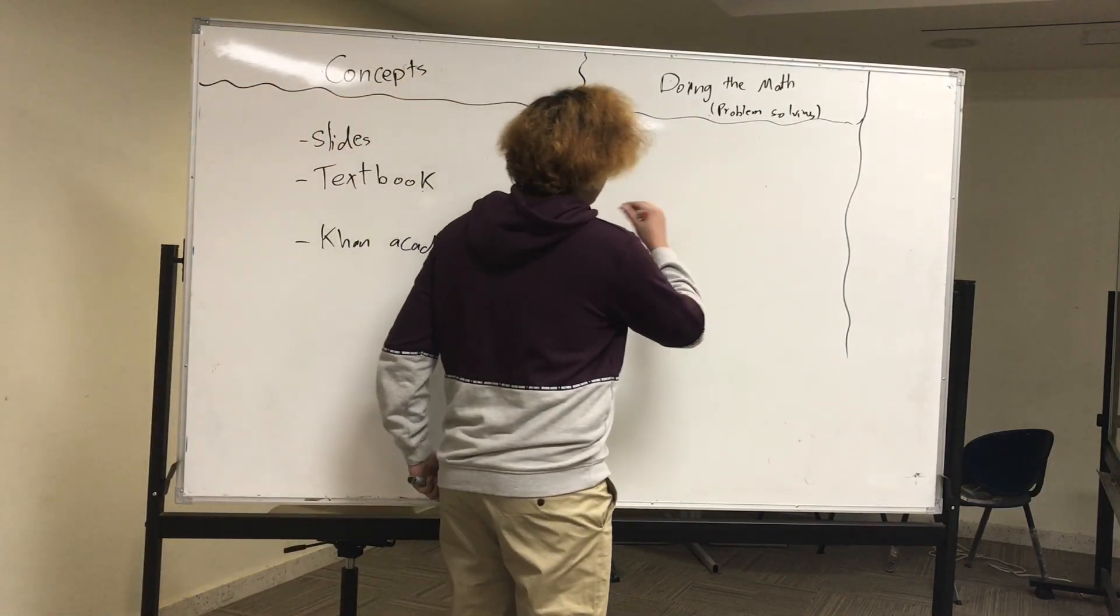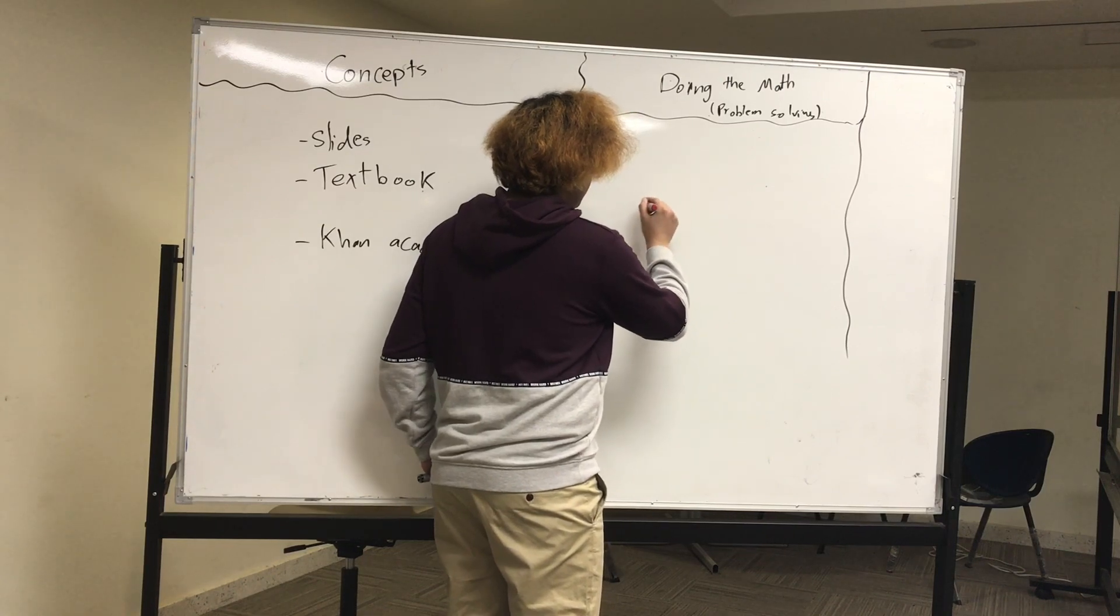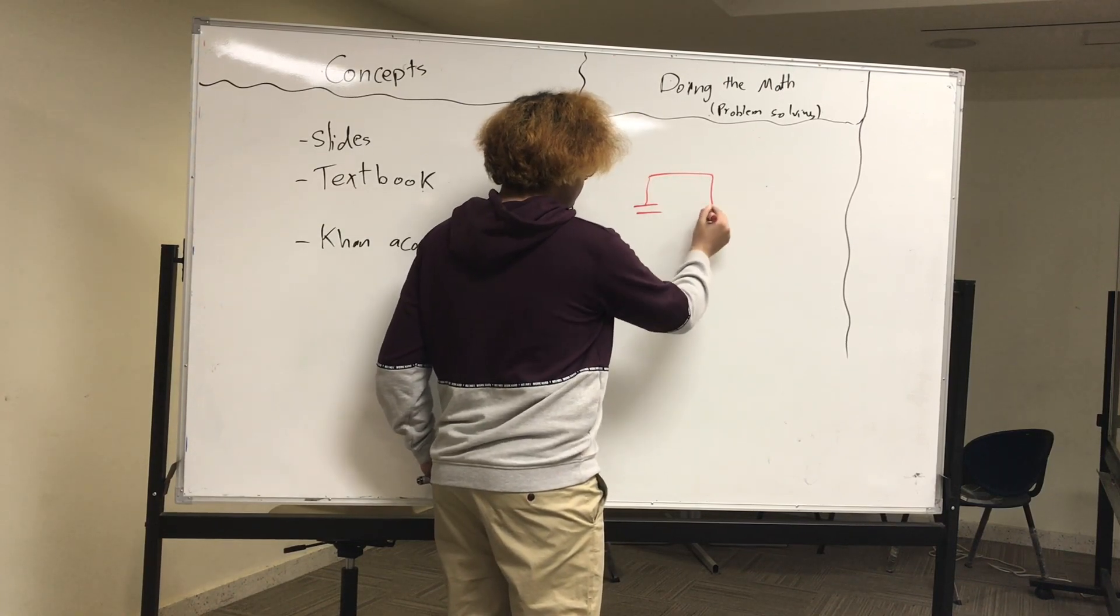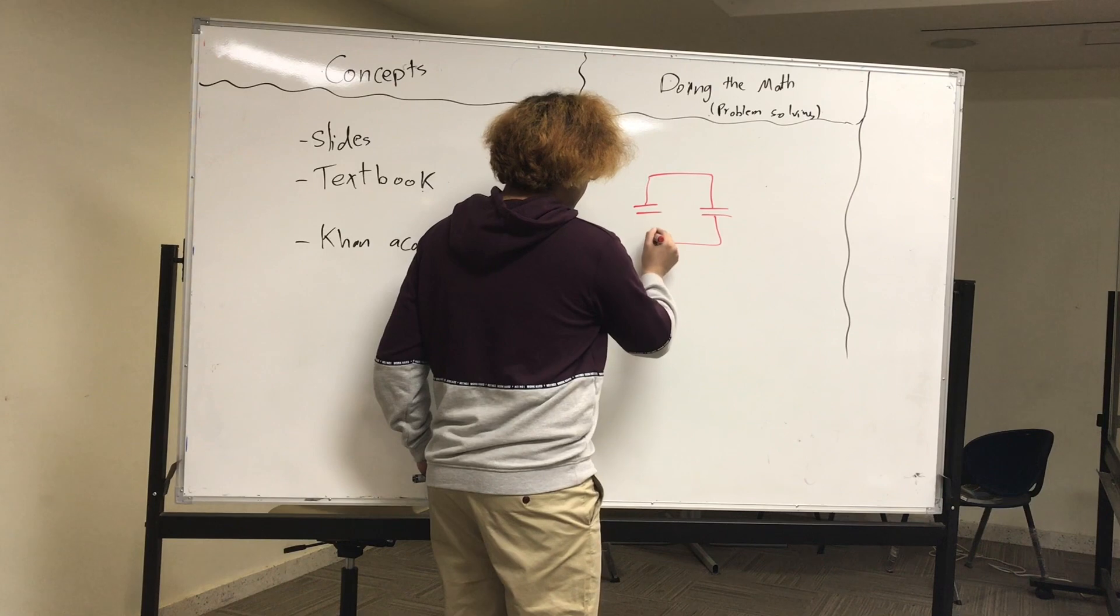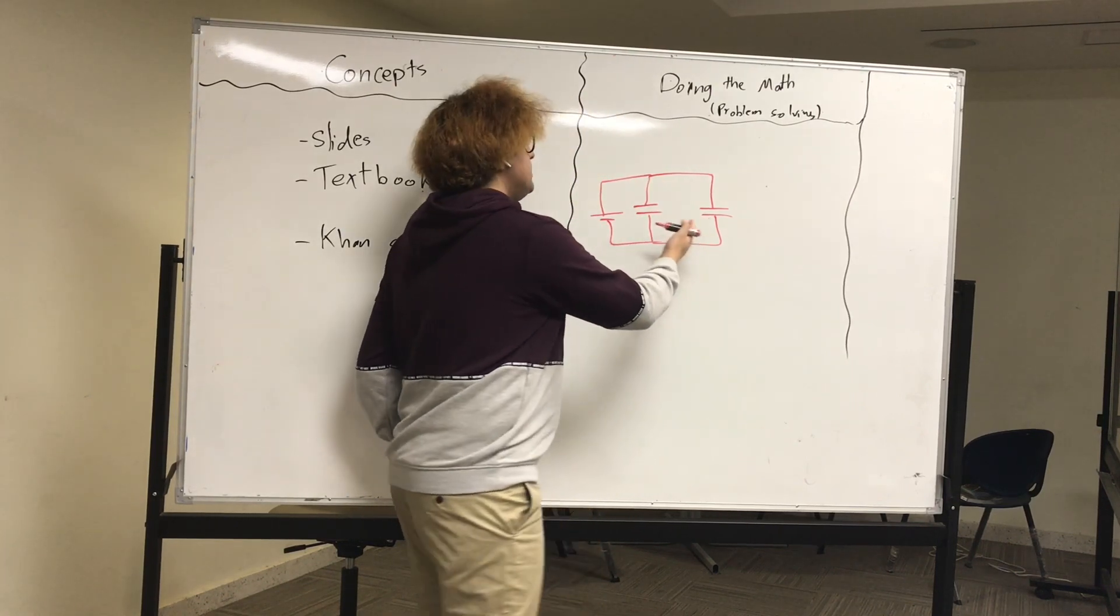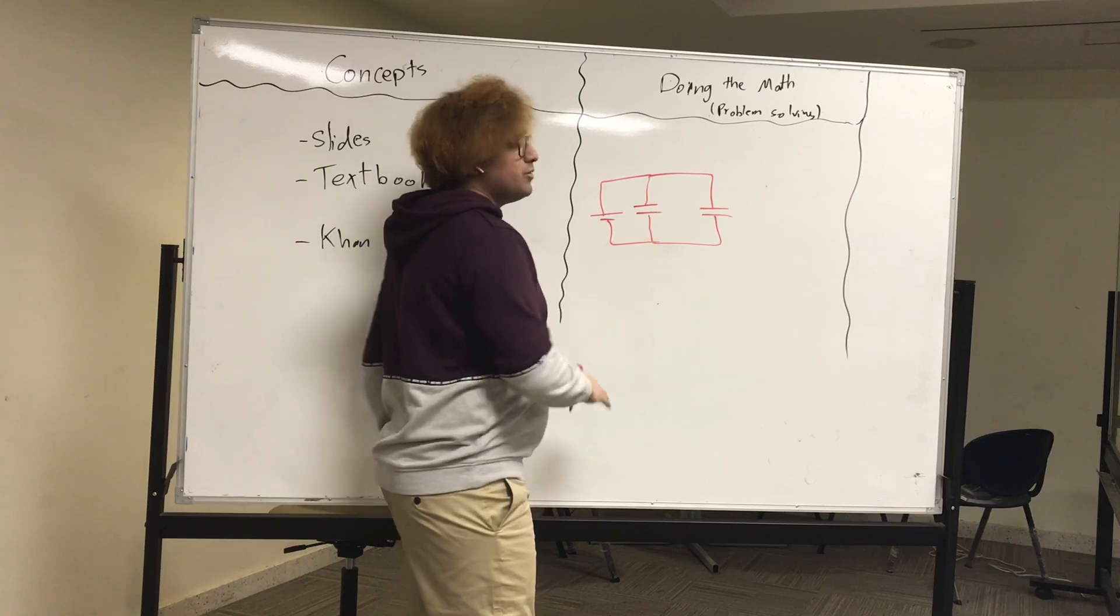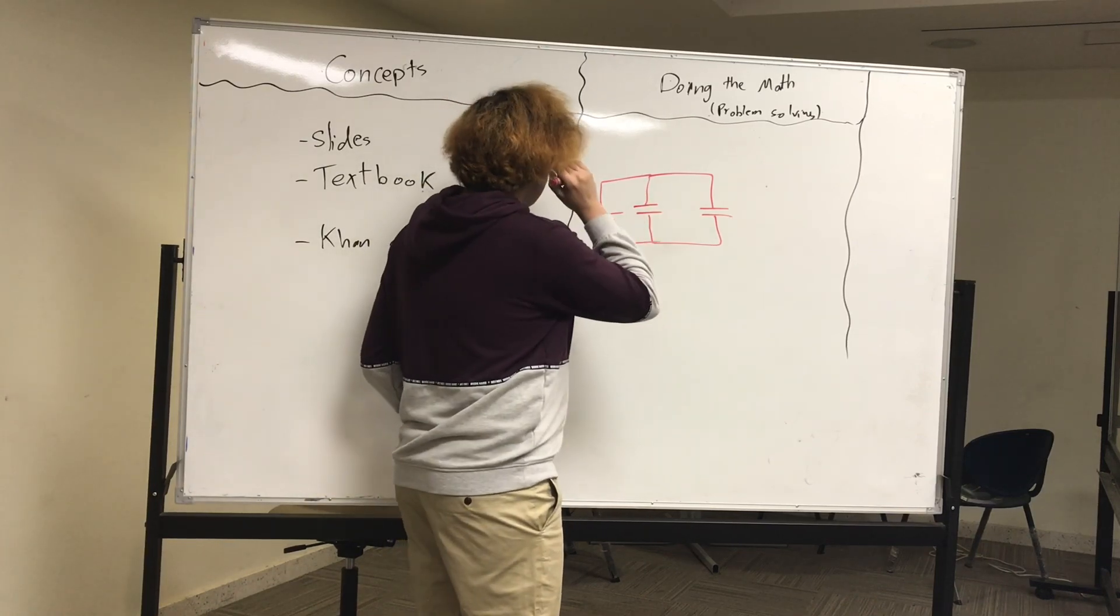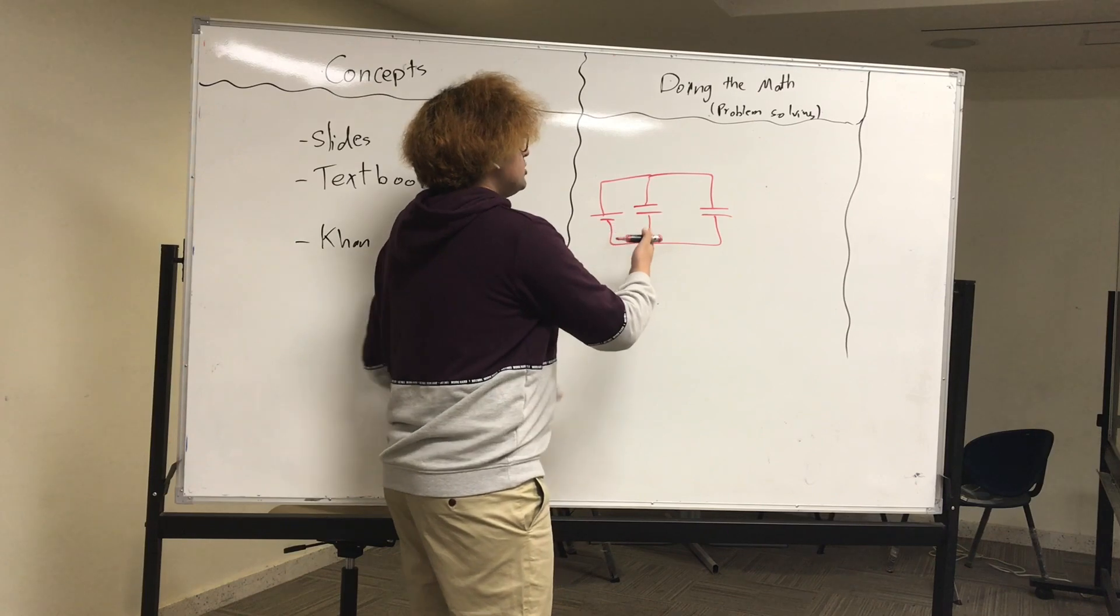For example, if you have a capacitor, another capacitor, and a battery. So understand the idea of parallel. Like, these two capacitors are units in a parallel in a battery.